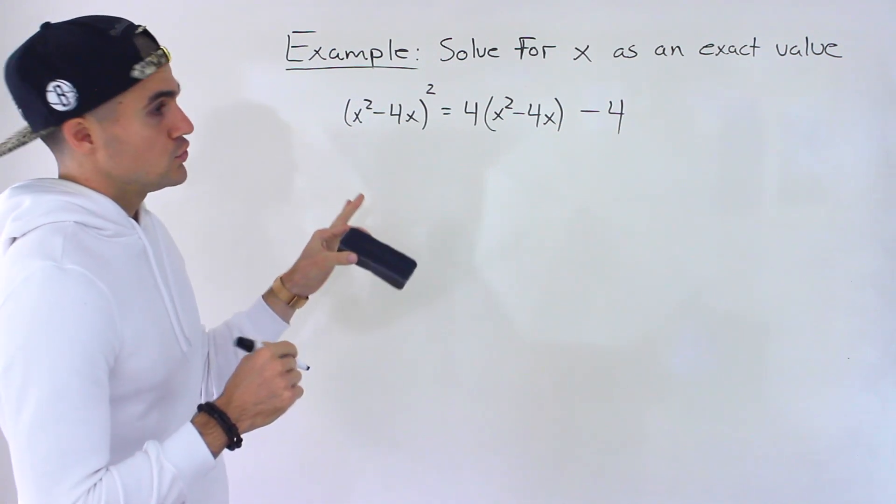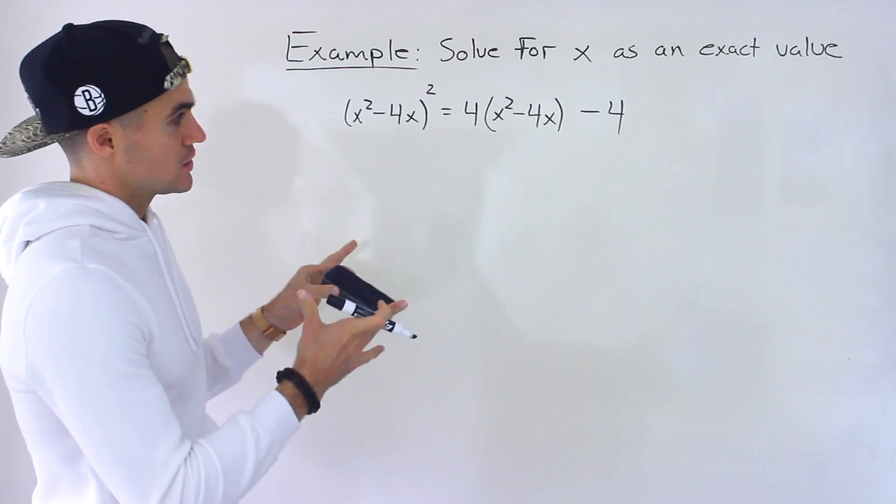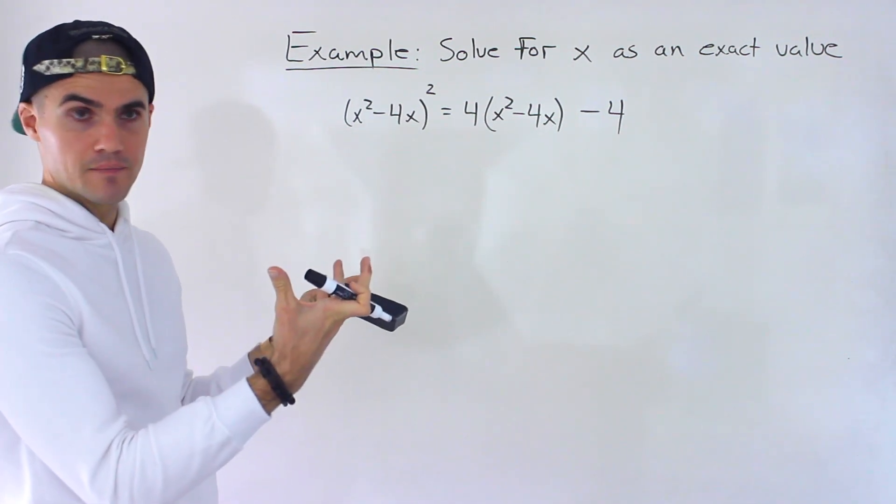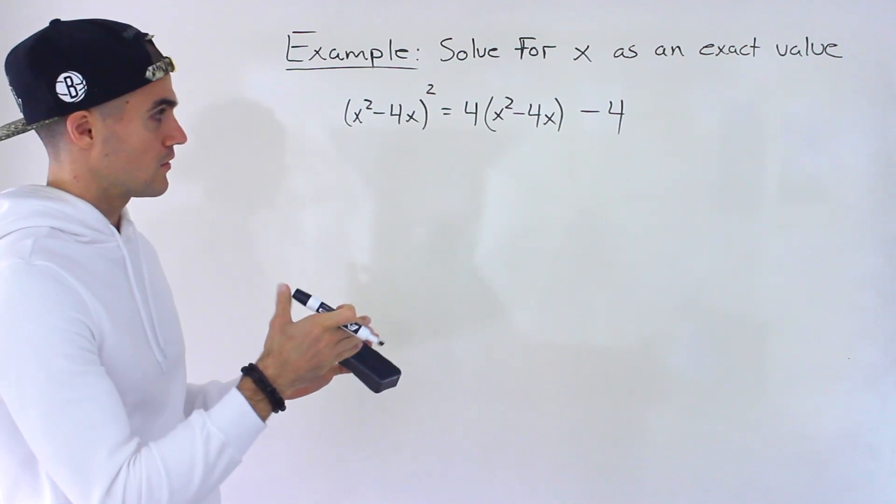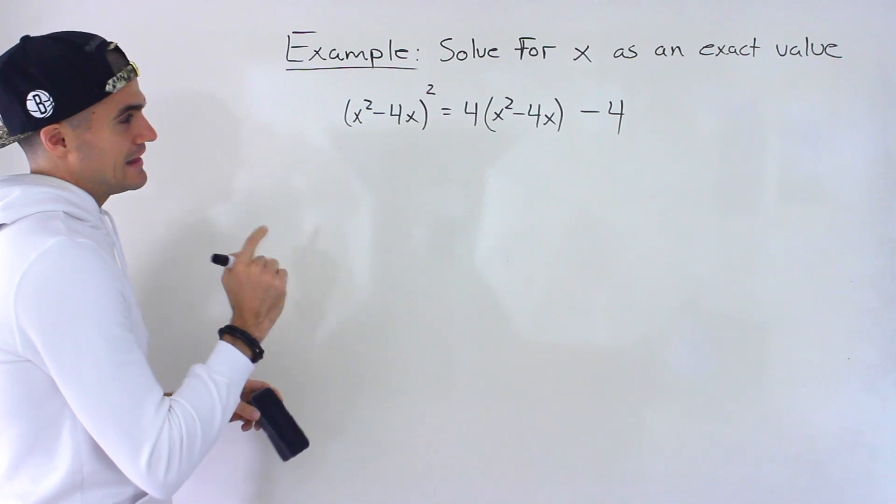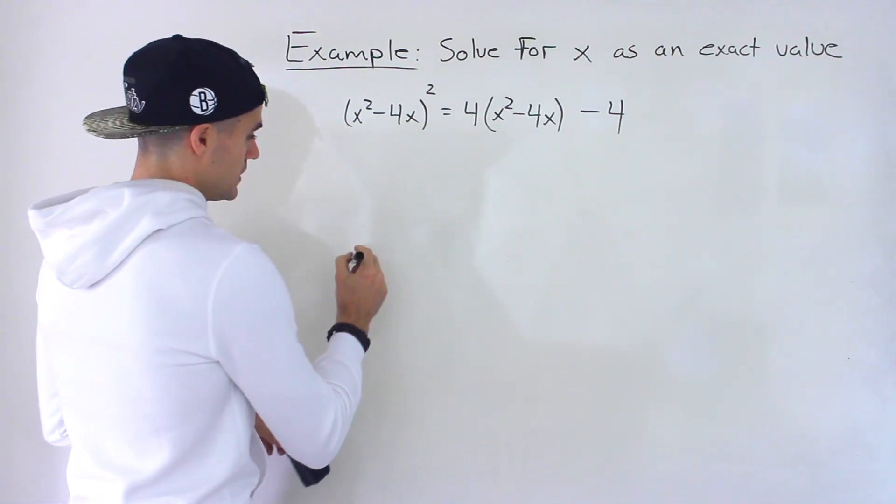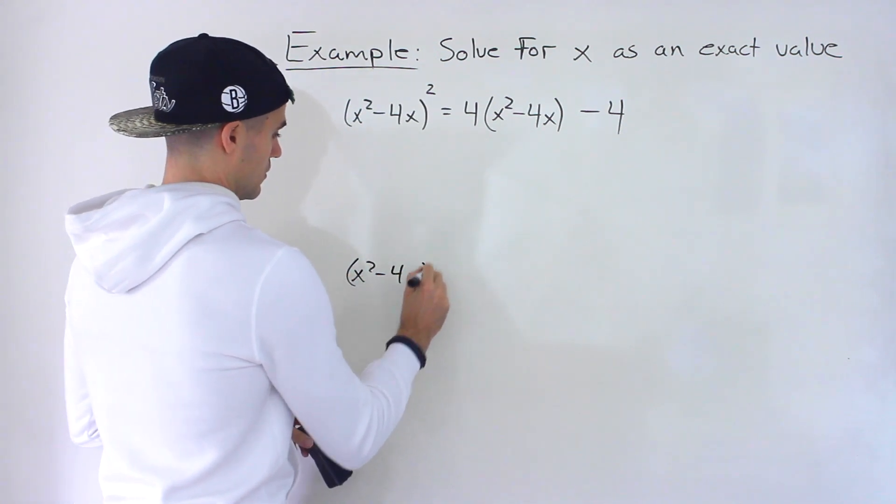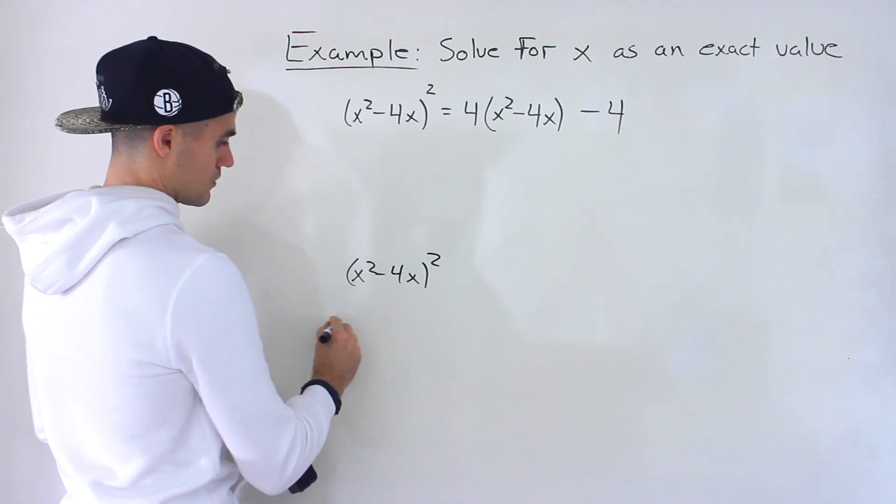Now usually what happens when we get a polynomial equation like this is we want to bring everything to one side, expand it, and then factor that side using the factor theorem. But in this case it's actually not going to work because if we do that, so let me just show you the wrong way to go about it and then we'll show you the right way.